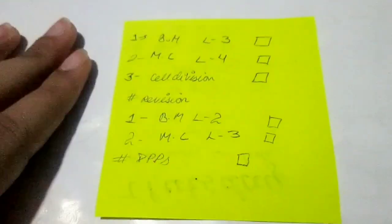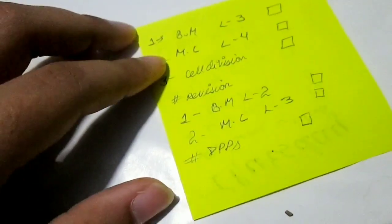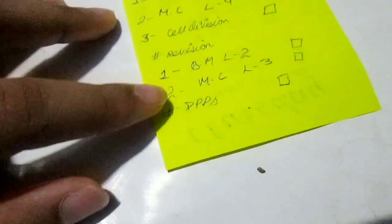So this is how my to-do list looks like. Today I'm going to cover Basic Maths Lesson 3, Mole Concept Lesson 4, Cell Cycle and Cell Division, and then I'm going to revise my previous lessons — Basic Maths Lesson 2 and Mole Concept Lesson 3. Revising the previous lecture every day is very important so that you're able to grasp everything in the present lecture related to the previous one.